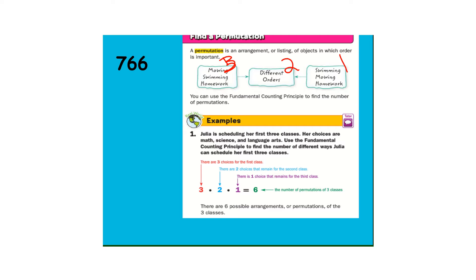Number one, Julia is scheduling her first three classes. Her choices are math, science, and language arts. Use the fundamental counting principle to find the number of different ways she could schedule her first three classes. So there's three classes for her first choice, then two, then one. Three times two times one. Just like the last problem, six.